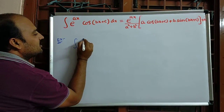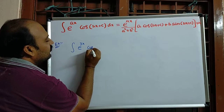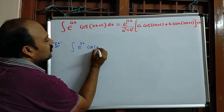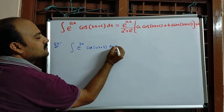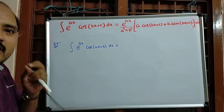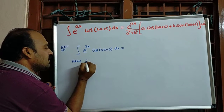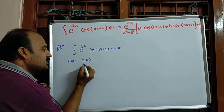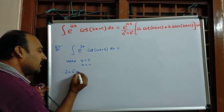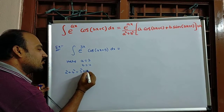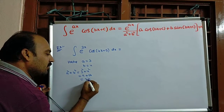Now one example: the integral of e^(3x) · cos(4x + 5) dx. Recognize the values: a = 3, b = 4. Calculate a² + b² = 9 + 16 = 25.